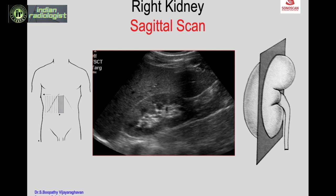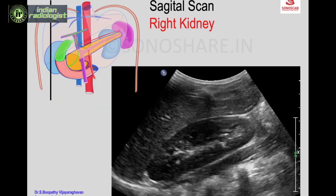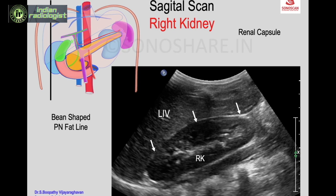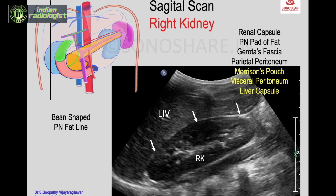This is the sagittal scan from the anterior subcostal approach; you see the right kidney posterior to the liver. In this sagittal scan of the right kidney from the anterior aspect you see the liver and the kidney, which is bean-shaped. You see a perinephric fat line all around the kidney, which encompasses five structures: the renal capsule, perinephric pad of fat, Gerota's fascia, parietal peritoneum, Morrison's pouch, visceral peritoneum, and the liver capsule.